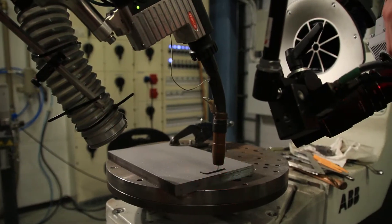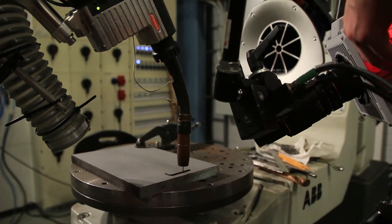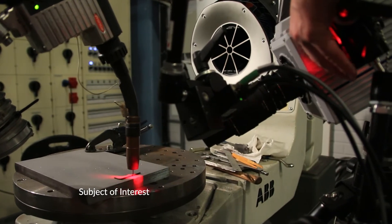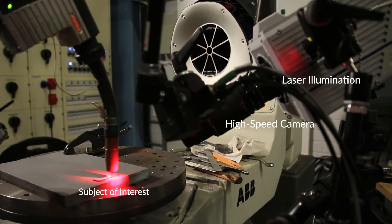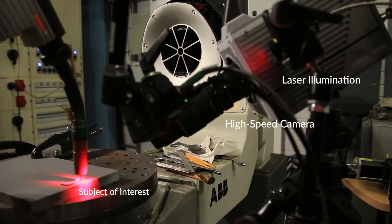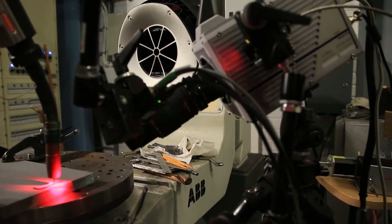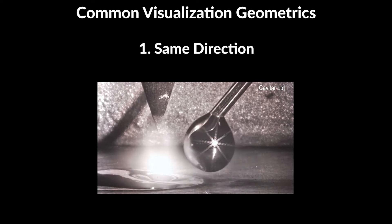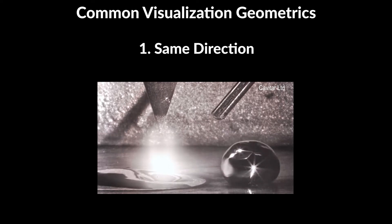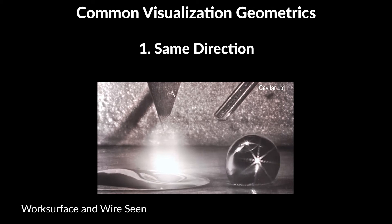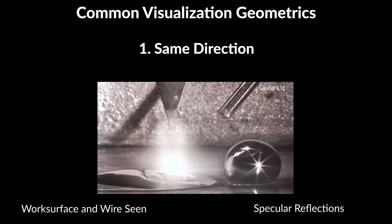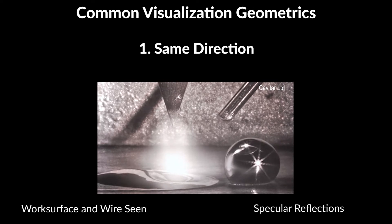By modifying the relative angle between the camera and illumination, different features of the welding process can be highlighted. Additionally, the positioning of the camera and the illumination also play a role in avoiding specular reflections from the metal surfaces of the workpiece. Common visualization geometries include: 1. The camera and the illumination are pointed at the same process from essentially the same direction. The surface of the workpiece and the wire, among other things, can be seen clearly. Specular reflections, however, might cause disturbances in the image.